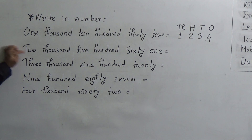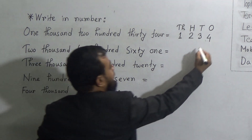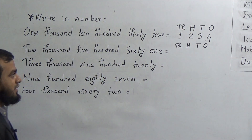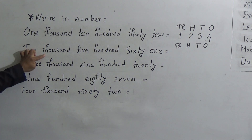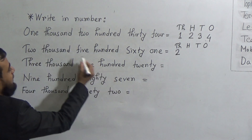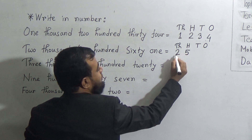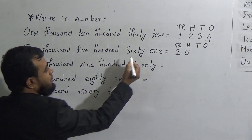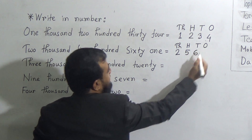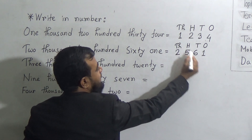The next number is 2,561. We write down the places again: ones, tens, hundreds, and thousands. Now 2,000 means we fill the thousands place with 2. Then 500 means we fill the hundreds place with 5, giving 2,500. After that, 60 means 6 goes in the tens place. And 1 goes in the ones place. So the number is 2,561.